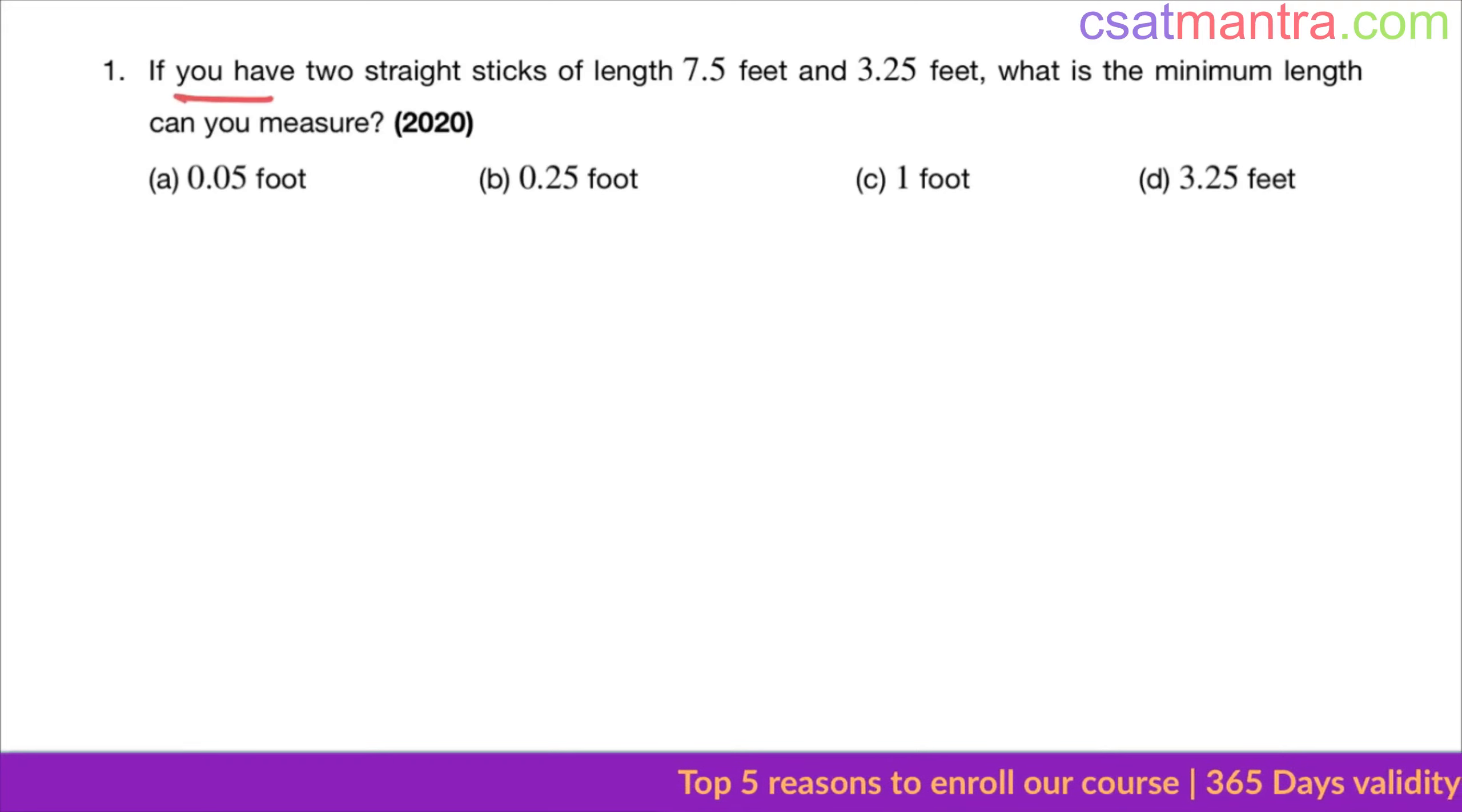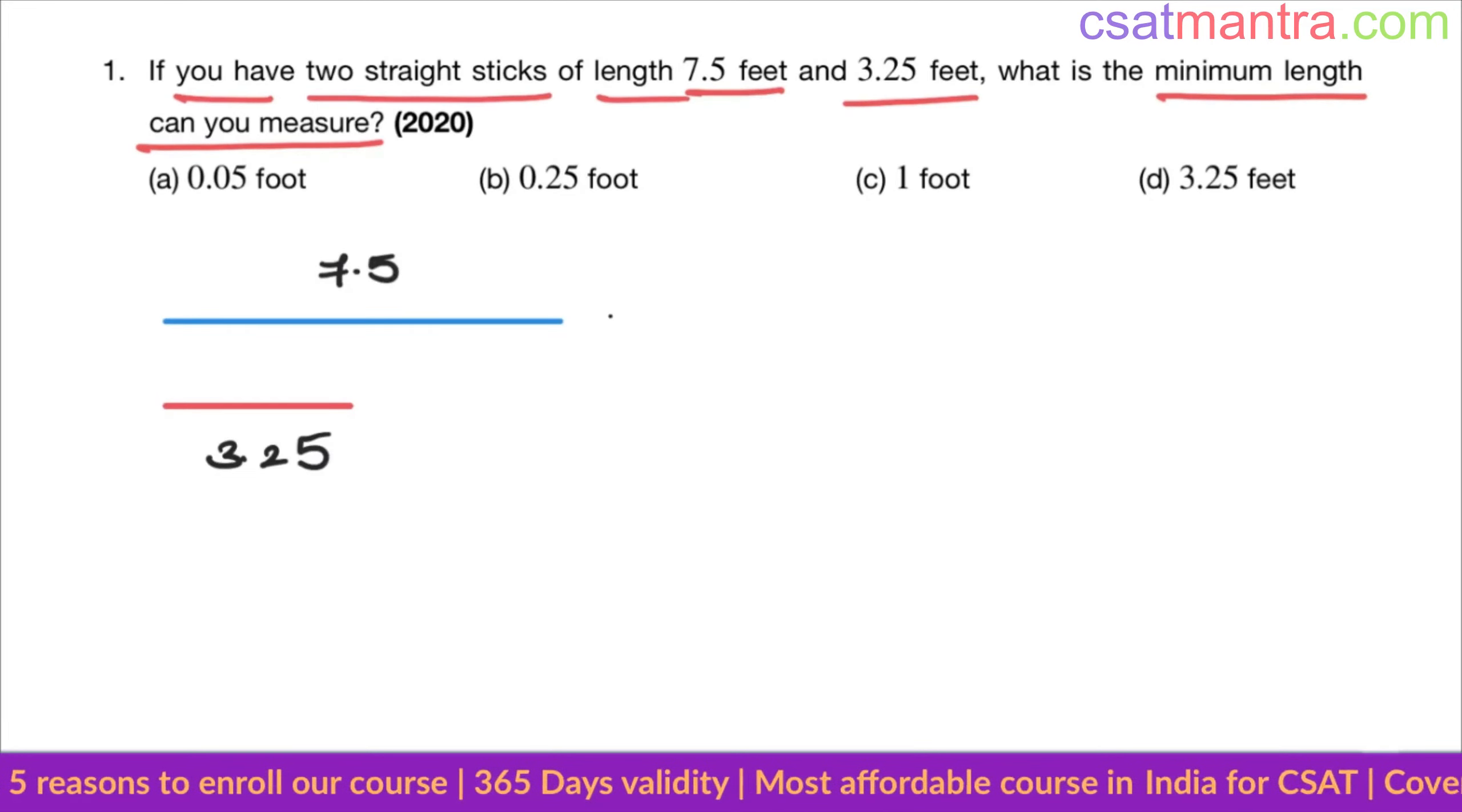If you have two straight sticks of length 7.5 feet and 3.25 feet, what is the minimum length can you measure? So we have two straight sticks of length 7.5 feet and 3.25 feet. We know 3.25 times two is 6.5.